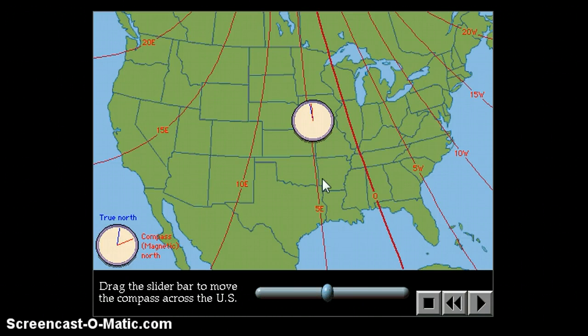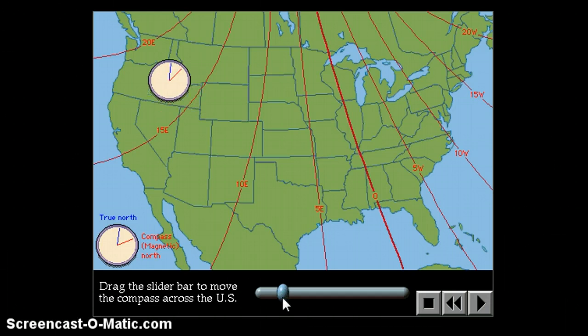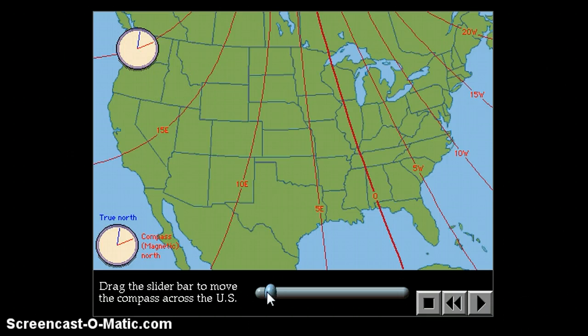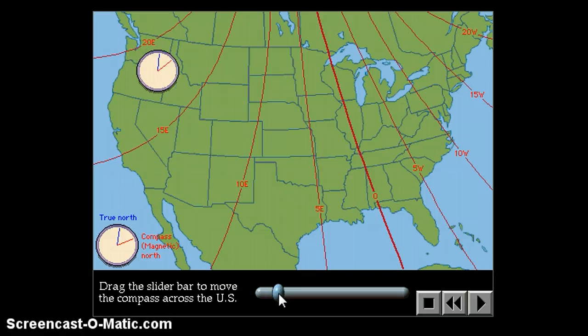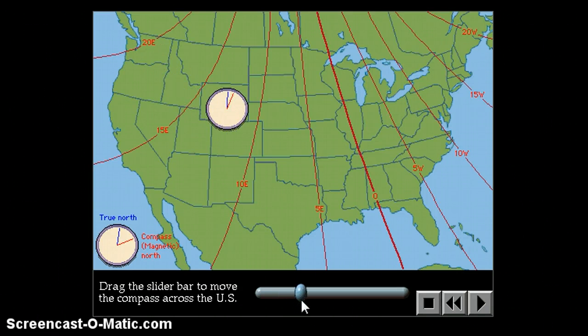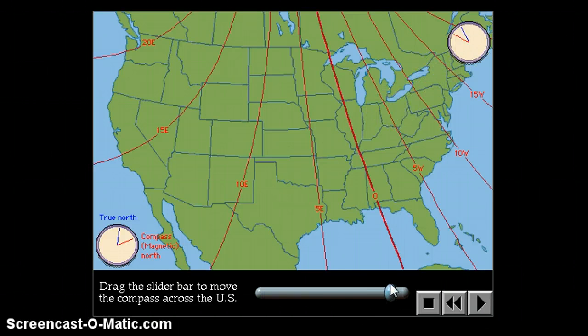This little graphic kind of shows us, if we had a compass, the blue is pointing the direction a longitude line would run. A longitude line runs to the spin pole, the geographic north. But the red points to the magnetic north, the direction that a compass would actually point.